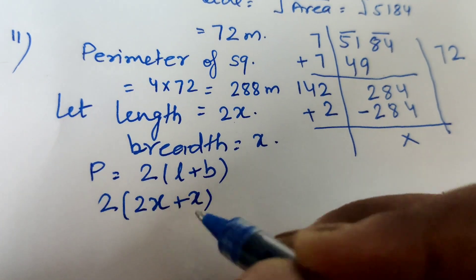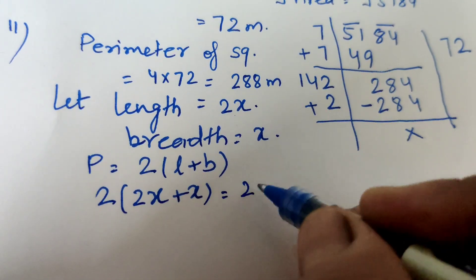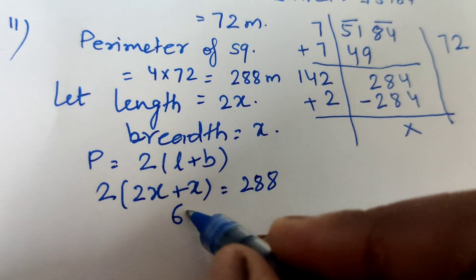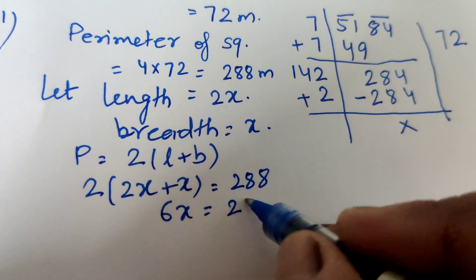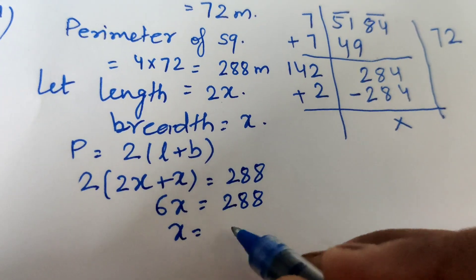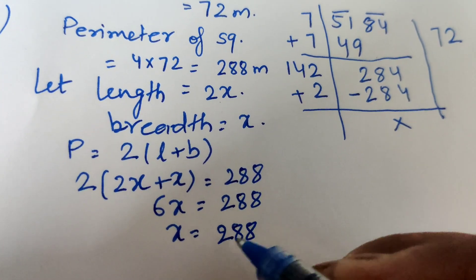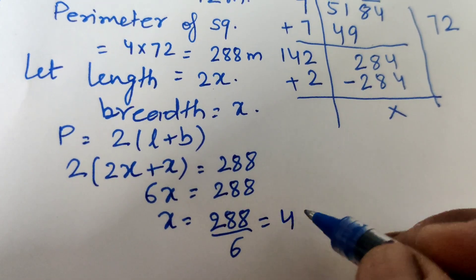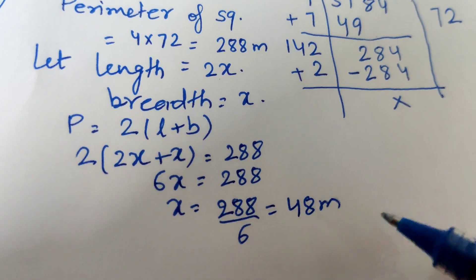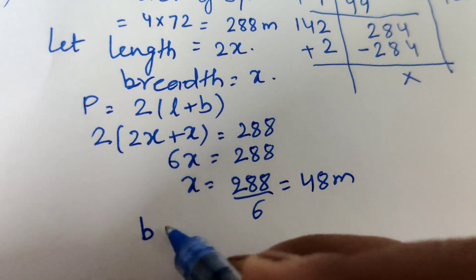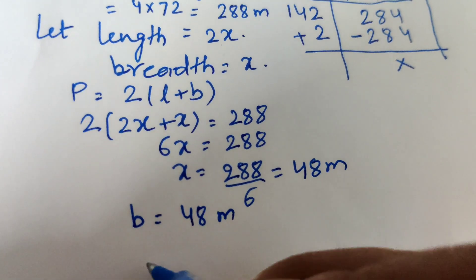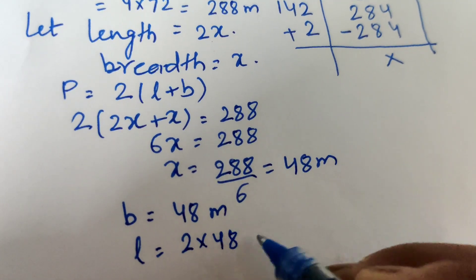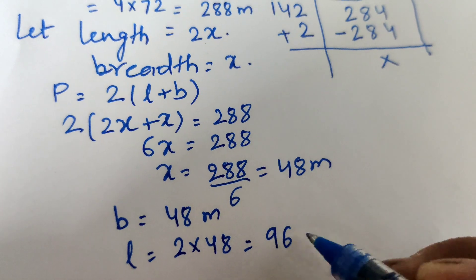So 2(2x + x) = 288, which gives 6x = 288, therefore x = 288 ÷ 6 = 48 meters. So the breadth equals 48 meters and the length equals 2x = 2 × 48 = 96 meters.